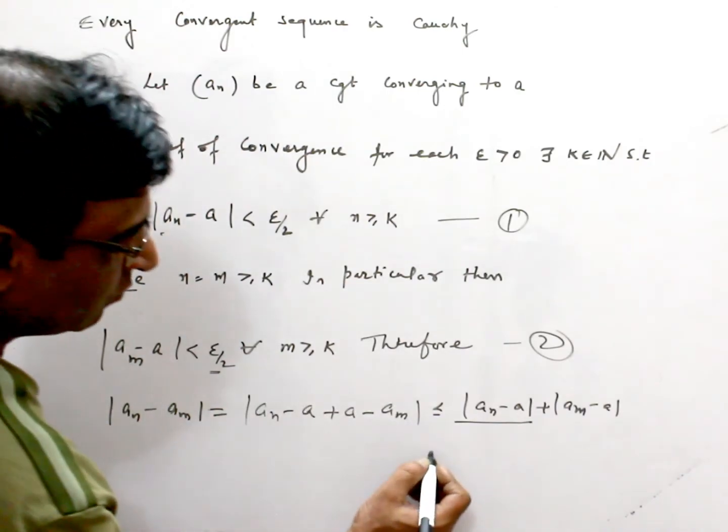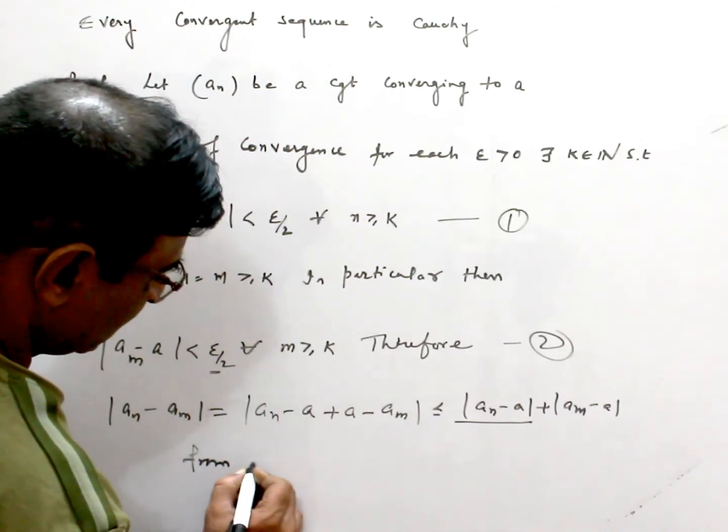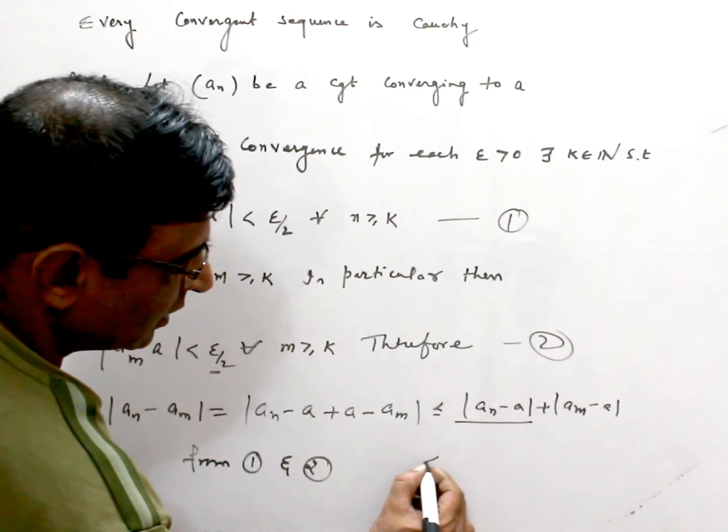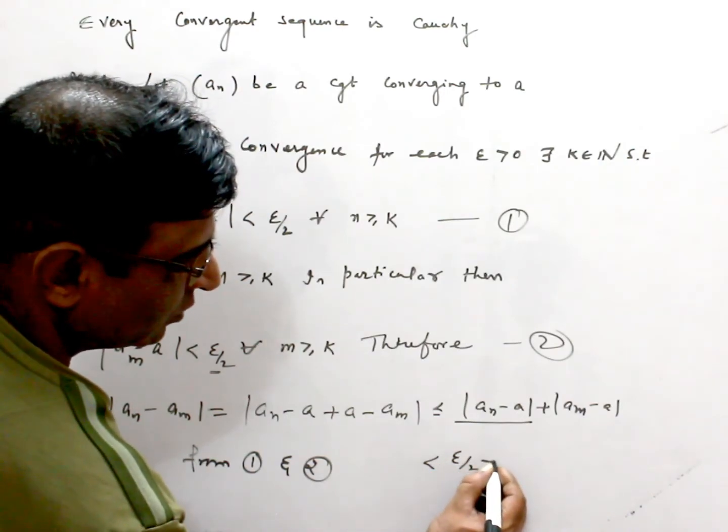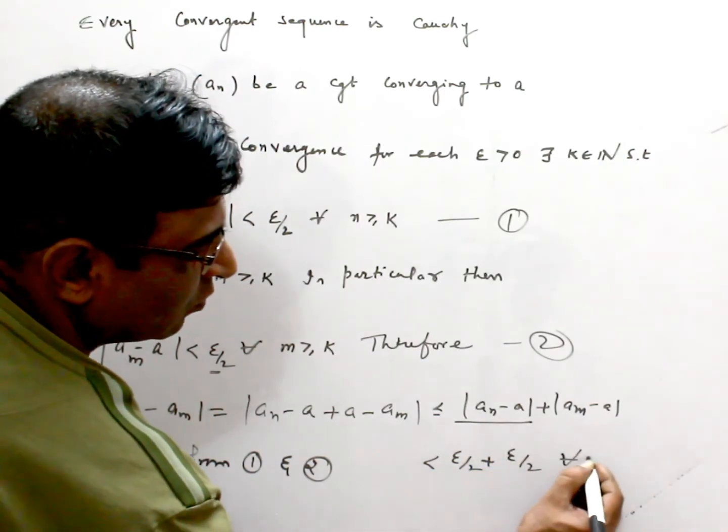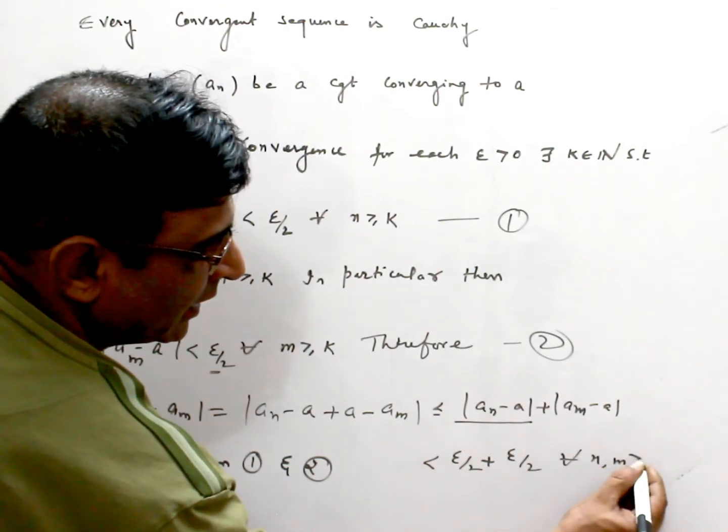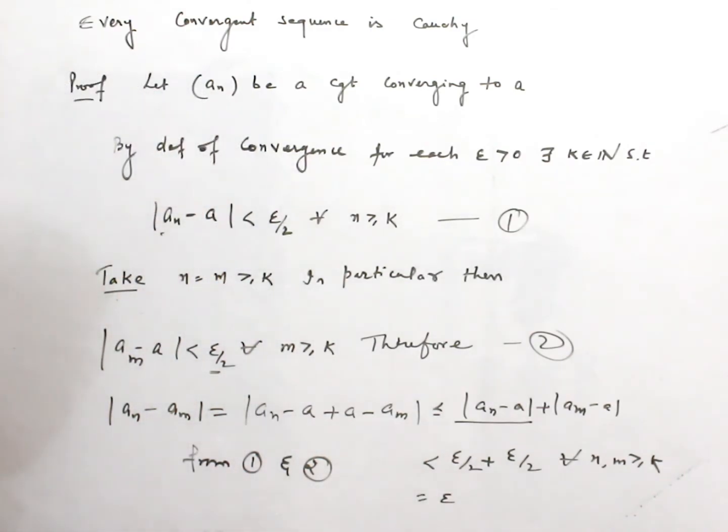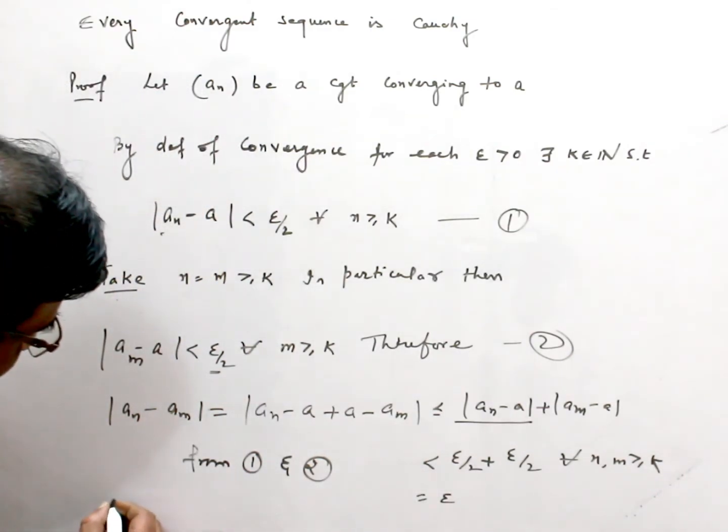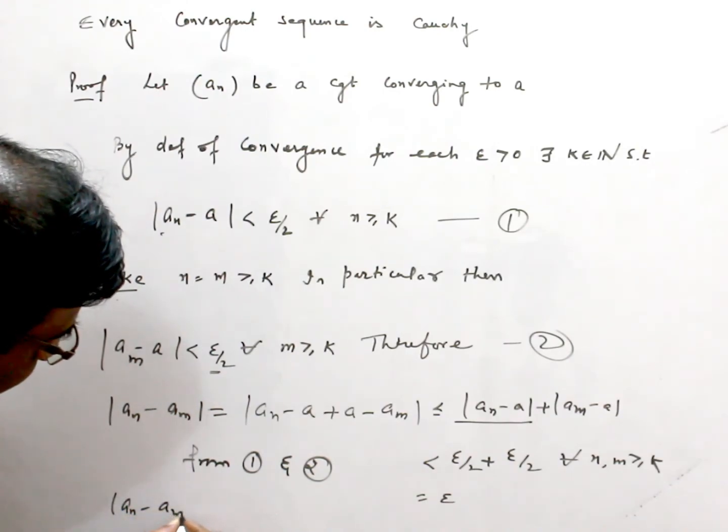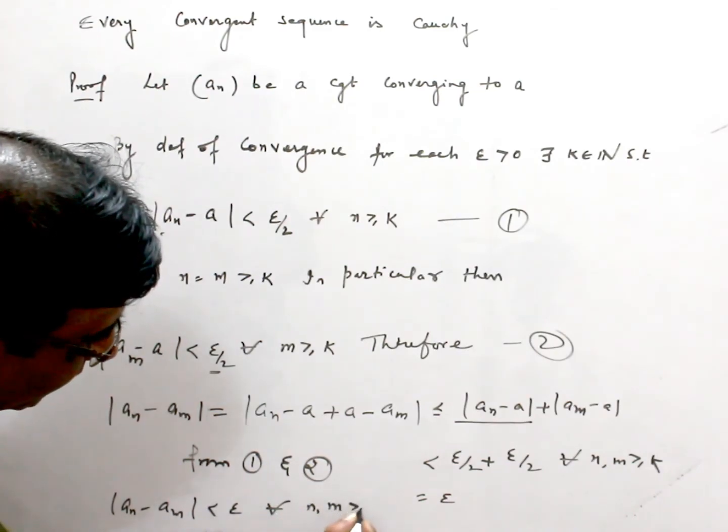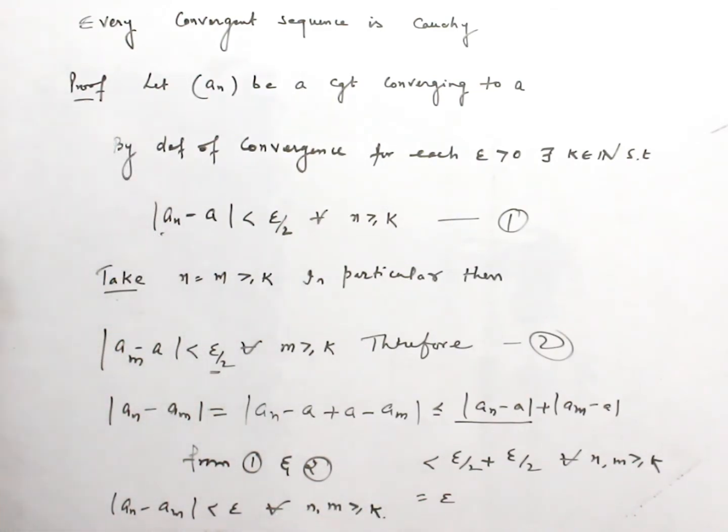So from (1) and (2), this becomes less than ε/2 plus ε/2, for all n, m greater than K. This equals ε. That means, finally, we have proved that |An - Am| < ε for all n, m ≥ K. So, every convergent sequence is Cauchy.